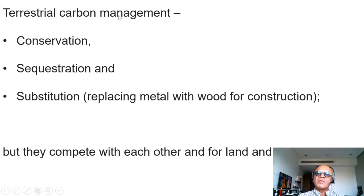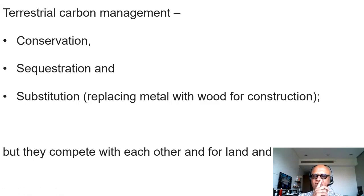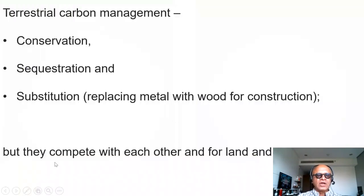In terrestrial carbon management you have conservation and sequestration potentials, but also a substitution potential — for example, using wood in building construction instead of metal. That would be the substitution potential for terrestrial carbon management. These are simple nomenclatures but they can be systematically analyzed for their total mitigation potential. Of course, they are not independent: conservation, sequestration, and substitution all compete for land, water, and other resources.